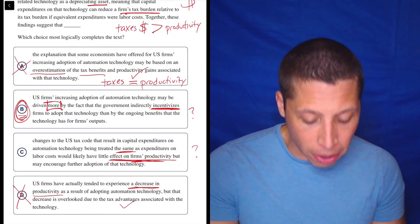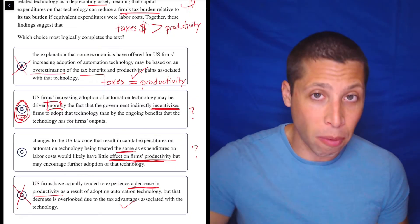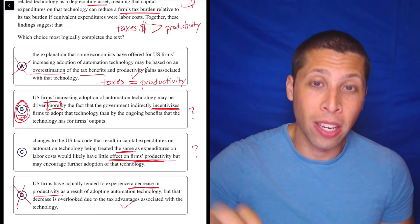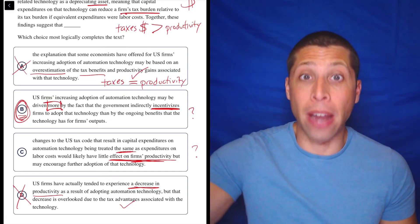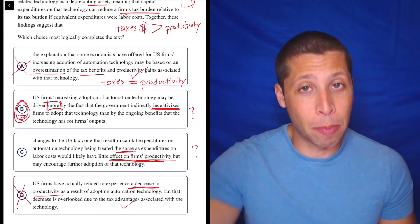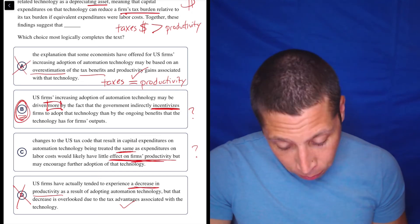That's kind of what that whole part is saying. And this part is reiterating that, that the government has made a choice to incentivize automation. To make that better. And it's not because of the productivity, it's because of the tax breaks.